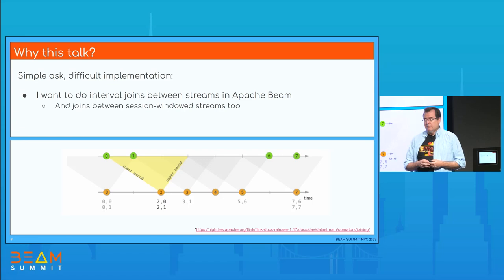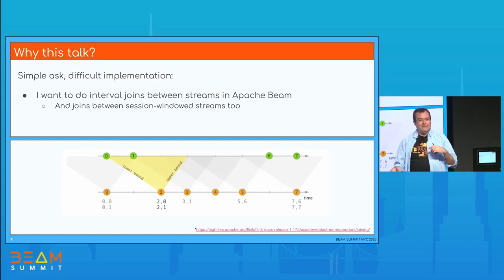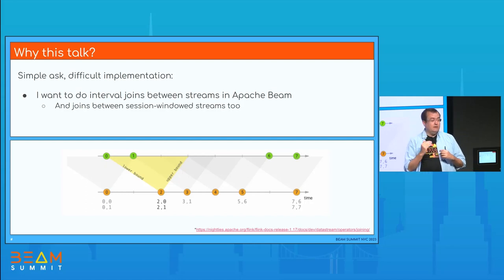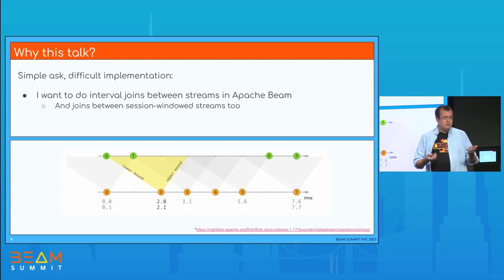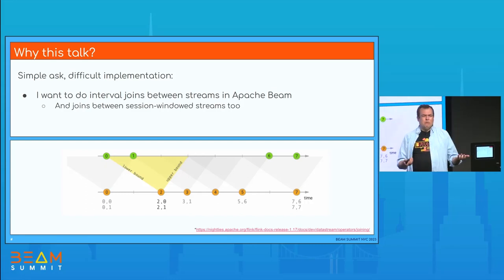In other systems like Apache Flink, joining with session windows is perfectly possible. You can do what are called interval joins, where you join the data when they overlap. Basically, this is what I want to be able to do — interval joins. We have actually talked elsewhere about how to enrich one stream with another, how to join two streams, and it's possible but kind of painful. So why is this actually difficult?